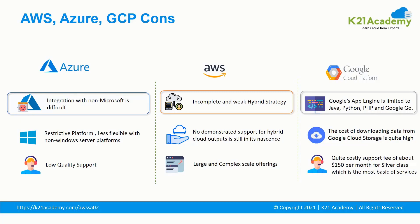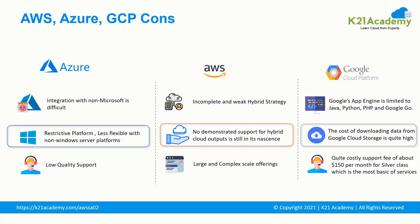Now let's look at the cons. Azure should provide easier integration with other product lines to improve accessibility — integration with non-Microsoft products is difficult. AWS is less open to private cloud, making it less popular in terms of storage options for sensitive industries like banking where user privacy cannot be compromised. In GCP, Google's App Engine is limited to Java, Python, PHP and Google Go — developers want improvement in this area. Azure is friendly with its own software and tools but not with non-Windows platforms. AWS has no demonstrated support for hybrid cloud.